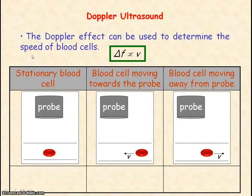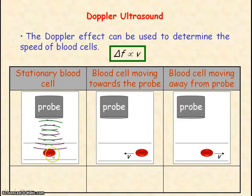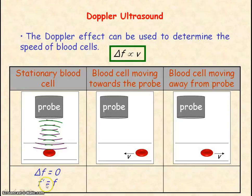The Doppler effect can be used to determine the speed of blood cells, and the Doppler shift — the change in frequency — will be directly proportional to the speed of the blood cells. The ultrasound probe directs ultrasound towards blood cells where they get reflected back to the probe. If the blood cells are stationary, there would be no Doppler shift, no change in frequency, and so f prime, the frequency of the reflected ultrasound received by the probe, would equal f, the original frequency emitted.